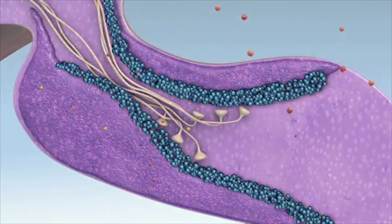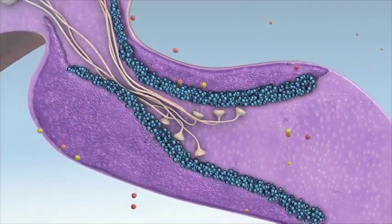The intermediate lobe, or pars intermedia, is affected in PPID.